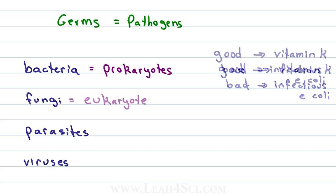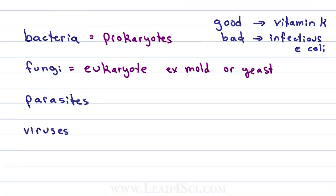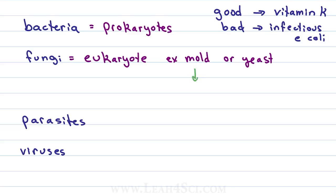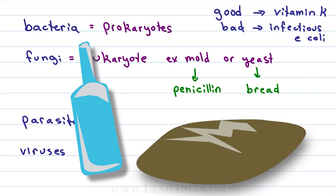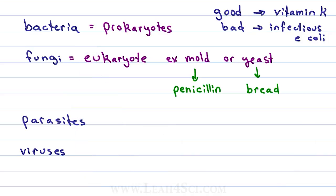A fungus on the other hand is a eukaryote and can include things like mold or yeast. Once again, we have some that are very beneficial and some that are pathogenic. Many antibiotics come from mold, like penicillin. And who doesn't love a delicious sourdough bread or some alcohol that relies on yeast to do the fermentation? Fungi can also be pathogenic — think of toxic mold that grows in humid areas or itchy yeast infections.